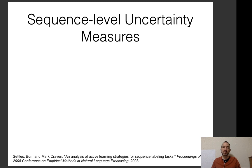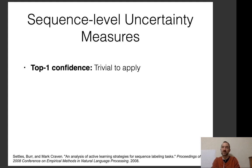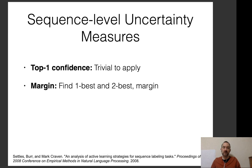For sequence-level uncertainty measures: top-one confidence is the likelihood of the output the model actually produces — for example, if a translation system outputs a translation with probability 0.1%, that's the top-one confidence. For margin-based methods, we output the top-one and top-two outputs via n-best search and calculate the difference in likelihood between them. Both are relatively straightforward to apply.